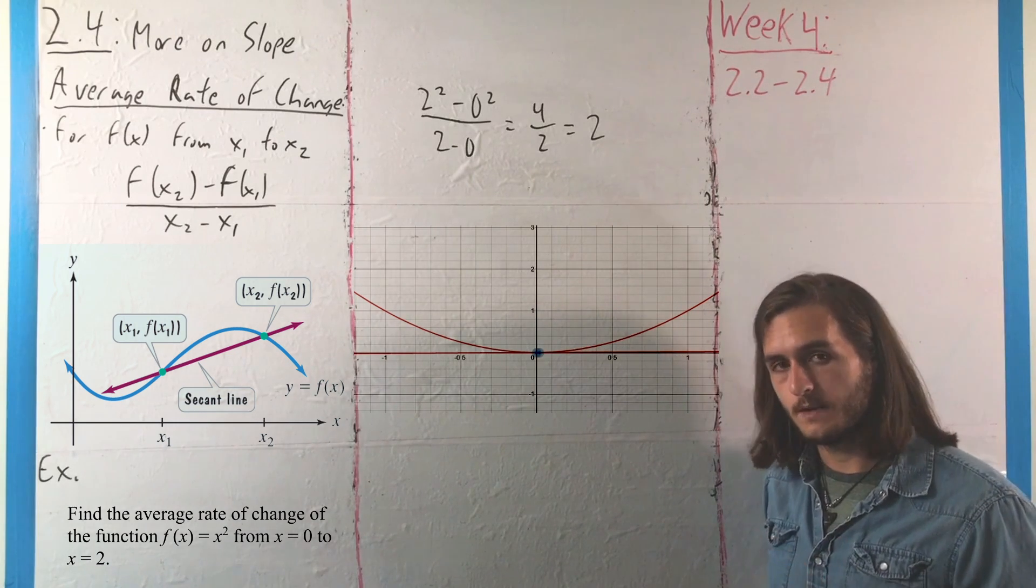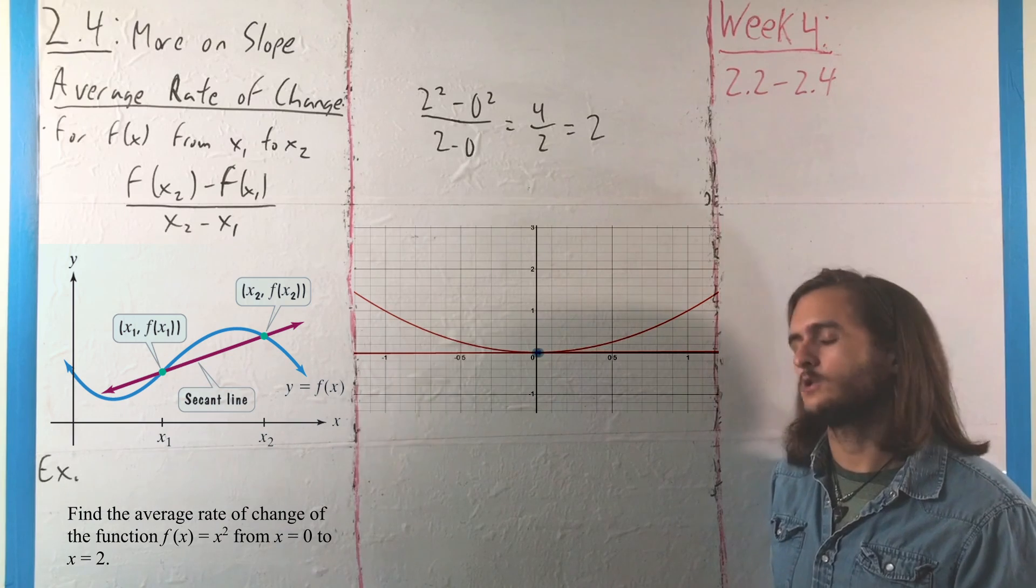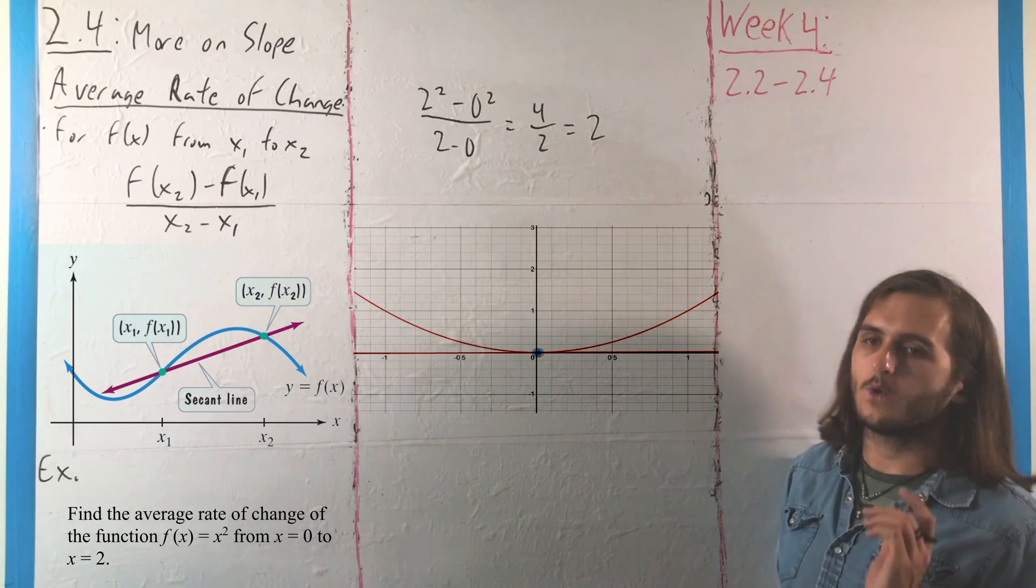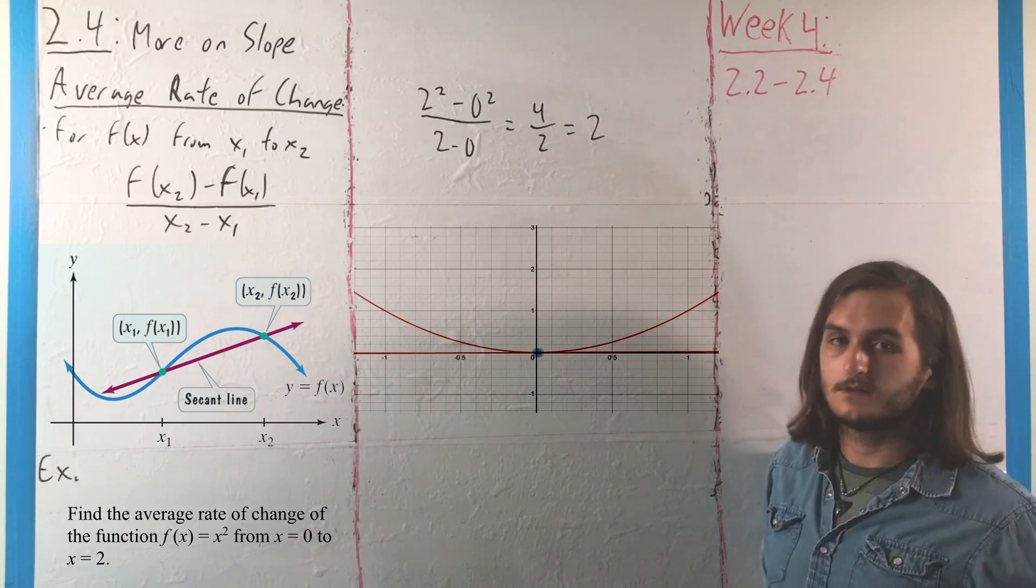That is to say, we're describing the instantaneous rate of change, or the slope at that point, or as I described earlier, the derivative.